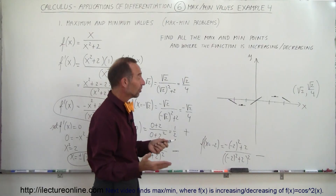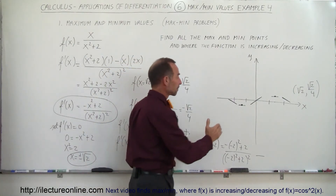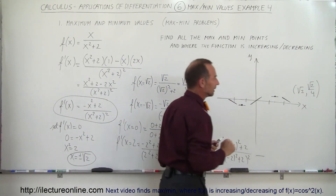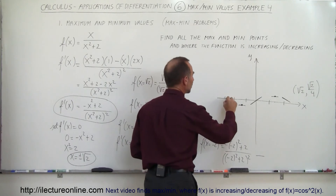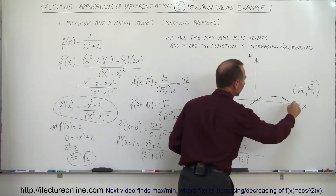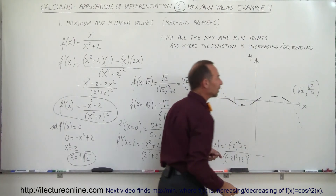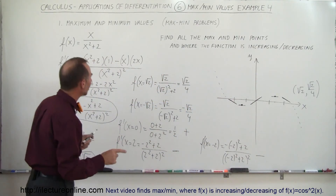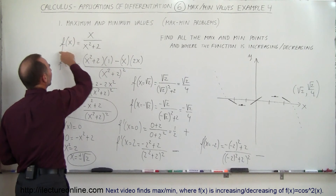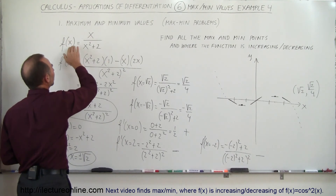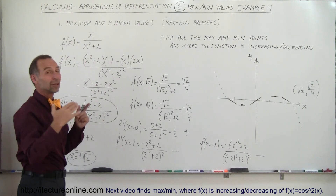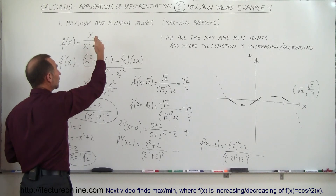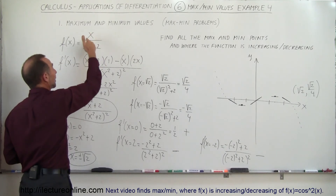So now we have a pretty good idea of what this function looks like. Will the function continue to go up and down indefinitely, or what will happen? We have to use our knowledge of algebra. Looking back at the original function, notice what happens to the value when x becomes very large — we have x divided by x squared.